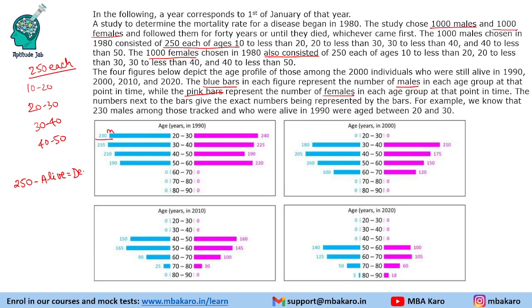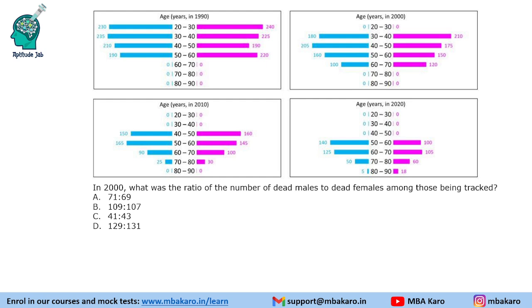How to read this graph: if a person is 20 to 30 in 1980, then after 30 years in 2010, they will be in the age range of 50 to 60. So these will be the number of people in that group. Let us see the questions to understand it.